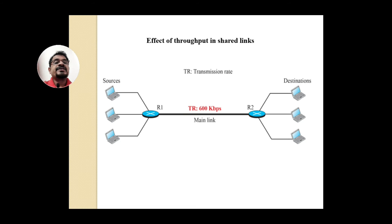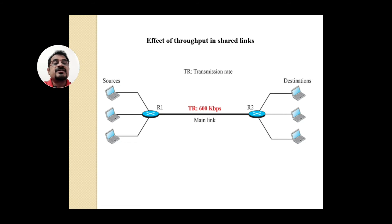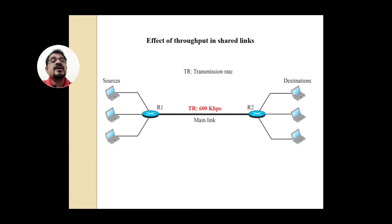Now let's see the effect of throughput on a shared link. If router R1 is connected to three sources, each generating 200 kbps, then R1 can receive up to 600 kbps per second — that is its maximum capacity for forwarding packets. If any source sends more than 200 kbps, packets will start queuing at R1. This is the effect of throughput on shared links, which is the norm in internet routing.